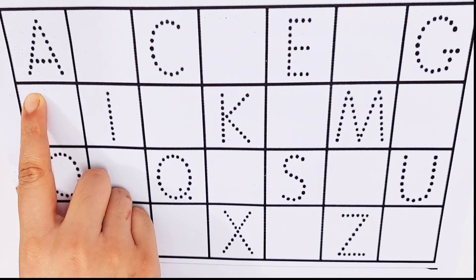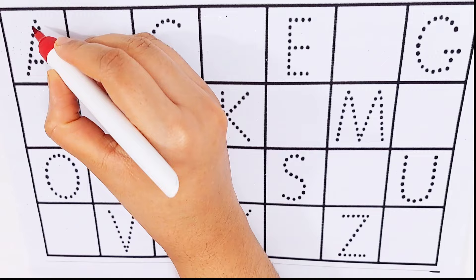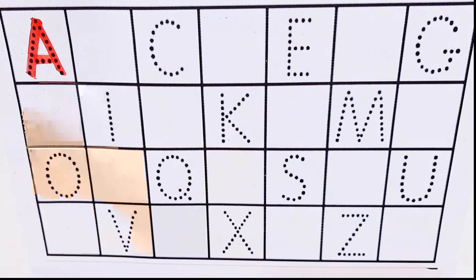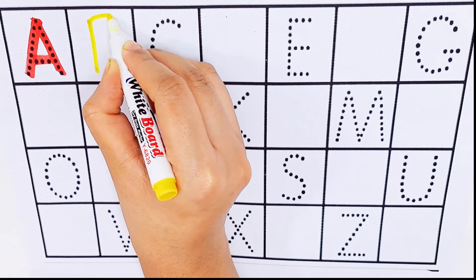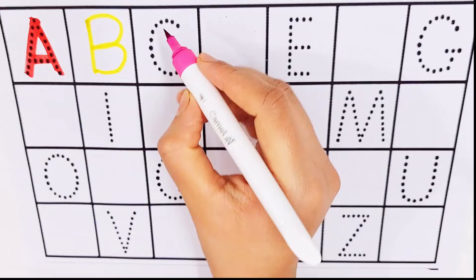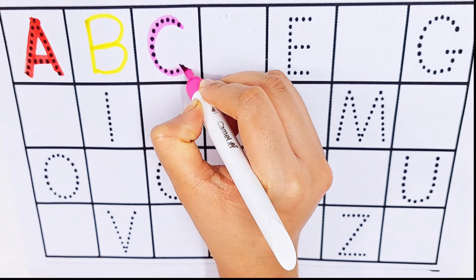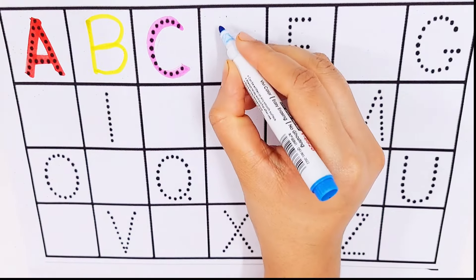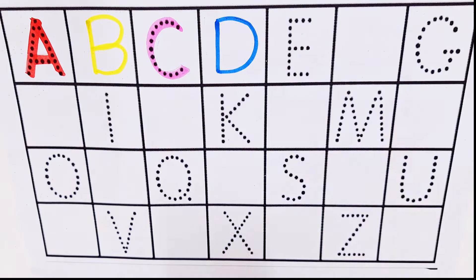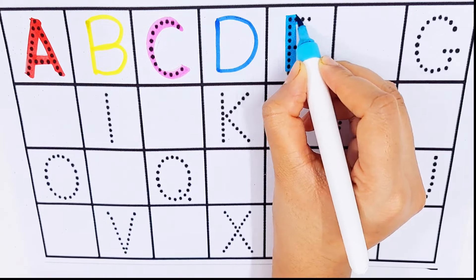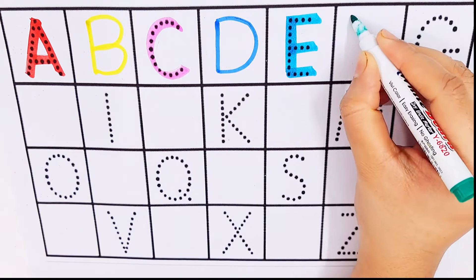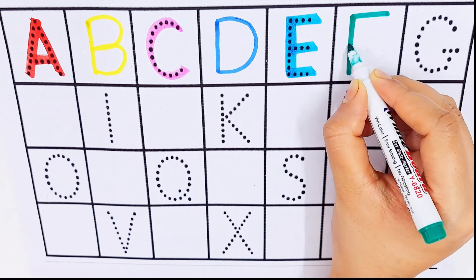Let's try to learn some alphabets. A, A for arrow. B, B for bus. C, C for cherry. D, D for duck.